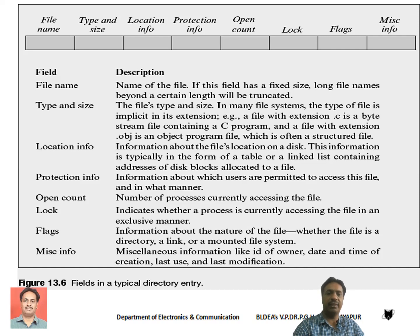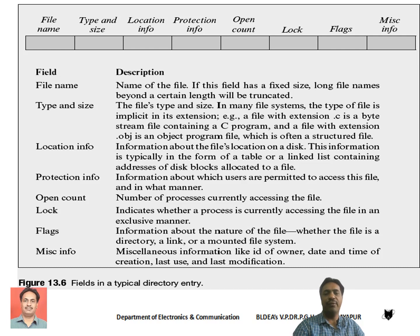For example, files in C language get the extension .c, and assembly language programs get extension .asm. The type is often indicated by the extension name. The size — meaning the number of bytes occupied by the file on disk — is also stored in this field. Then it contains location information, which indicates where exactly the file is stored on disk. This may be in the form of a table or a linked list of blocks.